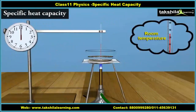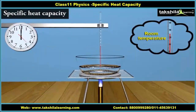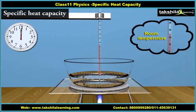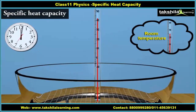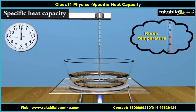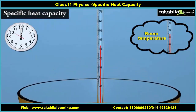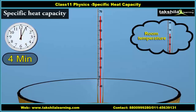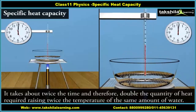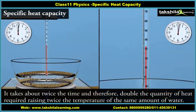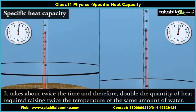In order to answer this question, in the first step, heat a given quantity of water to raise its temperature by, say, 20 degrees Celsius and note the time taken. Again, take the same amount of water and raise its temperature by 40 degrees Celsius using the same source of heat. Note the time taken using a watch. You will find it takes about twice the time, and therefore double the quantity of heat is required for raising twice the temperature of the same amount of water.